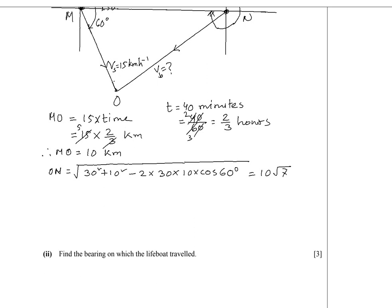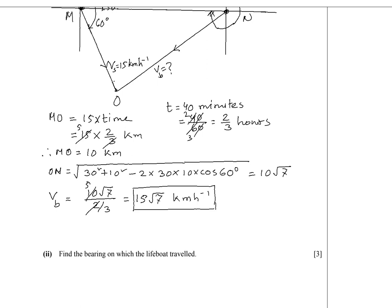This is the distance travelled by the lifeboat and the time was 40 minutes. Using speed equals distance over time, the speed of the boat is 10 times square root 7 divided by 2 over 3, which equals 15 times square root 7 kilometres per hour. So the speed of the lifeboat was 15√7 km per hour.